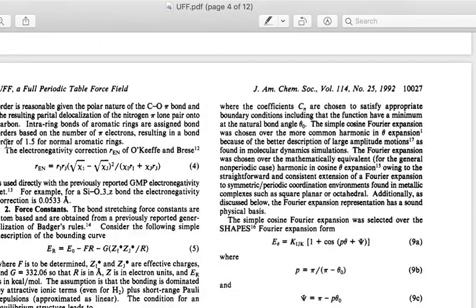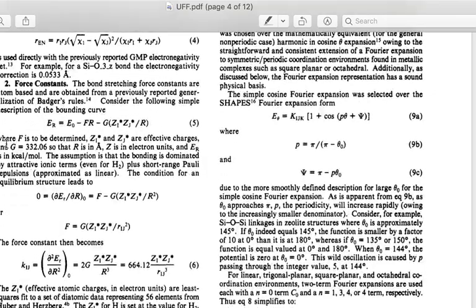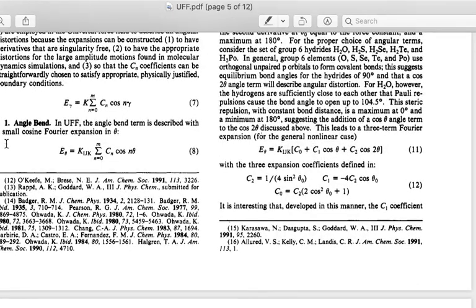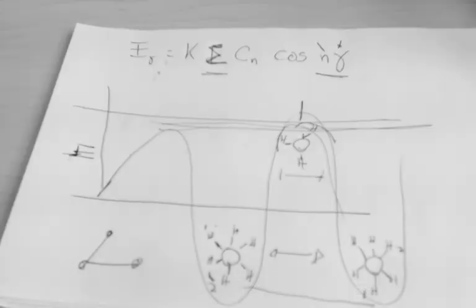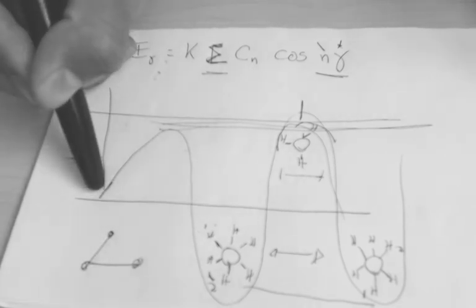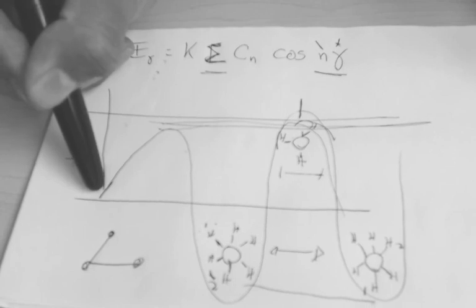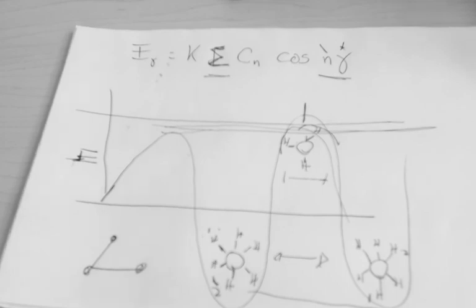The angle bend is going to be also very similar in form to the other correction—another cosine. So we're going to have the same wave. Remember, the cosine starts at the maximum value, whereas what I drew earlier was the sine. It's only a phase difference, but it matters: the choice of cosine versus sine determines whether you start at a maximum or at zero.